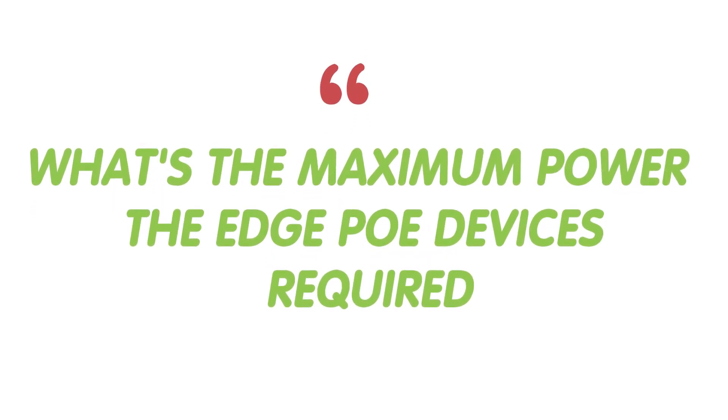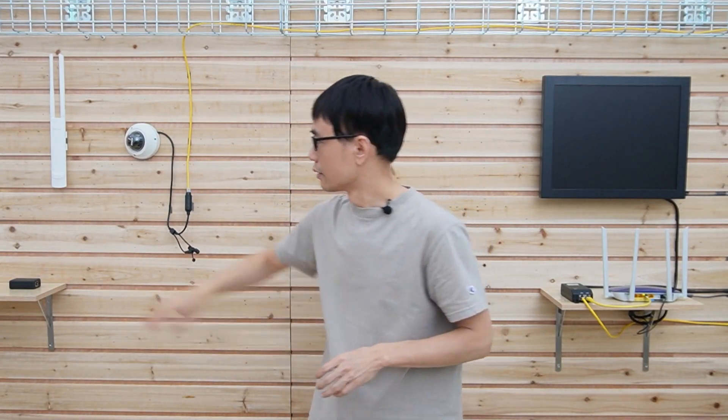The second thing is about the power budget. You may need to understand what is the maximum power budget your edge device requires. For this IP camera, you will need about 6 watts. The access point uses very similar power budget as this IP camera.